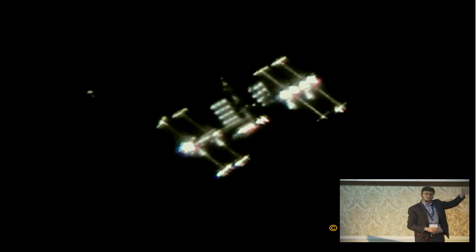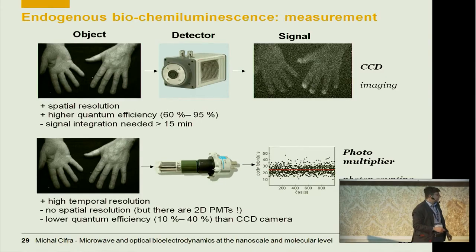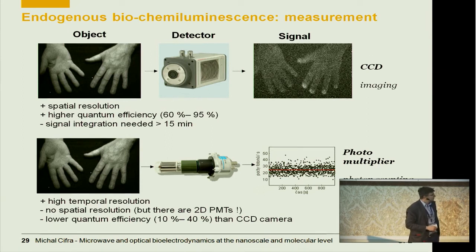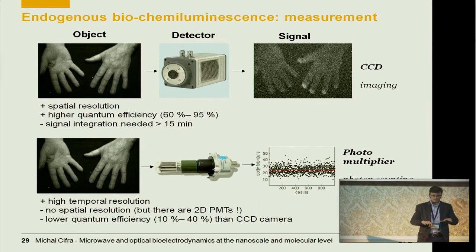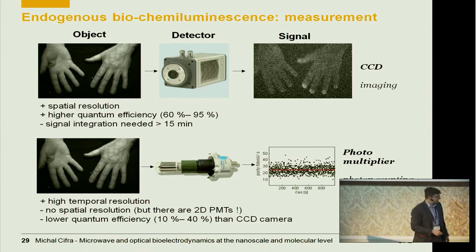There are basically two ways to detect very weak light. Either we use imaging — for example, of human hands, giving a spatial image which is important when the object is not homogeneous, as shown here from Professor Kobayashi and Roland Van Wijk and collaborators — or we can simply detect the total light from the sample, giving a time series. Both approaches have advantages that are well described in the literature.